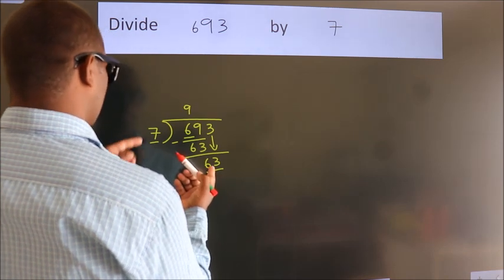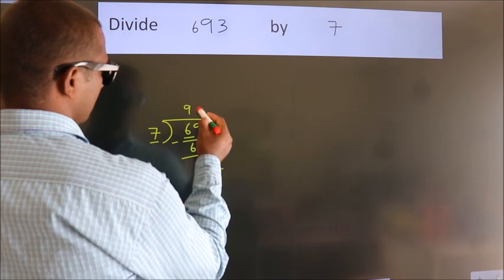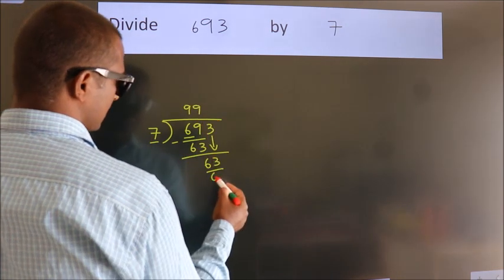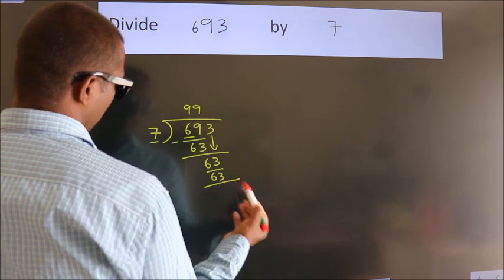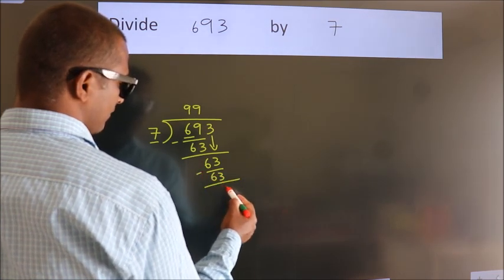When do we get 63? In the 7 table, 7 nines, 63. Now we subtract. We get 0.